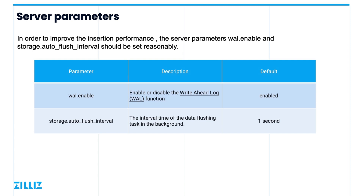wal.enable is in charge of enabling the write-ahead log. The WAL records insertion and deletion requests into a log file and the background thread writes it to the system. Once the requests are successfully written to the log file, the server returns success. This function enhances data reliability and reduces client blocking. The WAL function affects Milvus's insertion performance though. When WAL is disabled, the data insertion speed is faster due to writing the data directly to the mutable buffer. But if WAL is enabled, the write-ahead log module writes data to disk and then to the mutable buffer, so the insertion speed will be relatively slow.